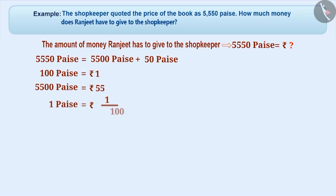Since 1 paise equals 1 by 100, that is 0.01, so 50 paise equals 50 by 100, that is 0.5.